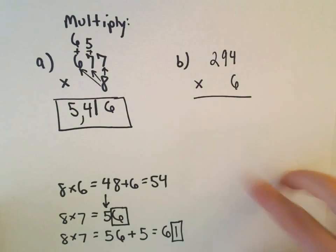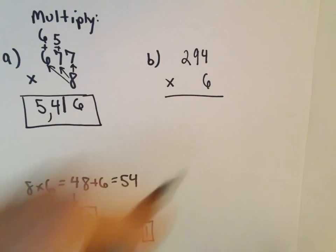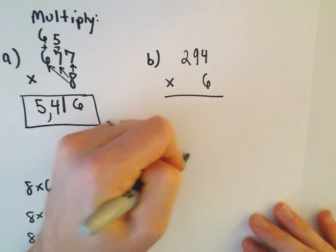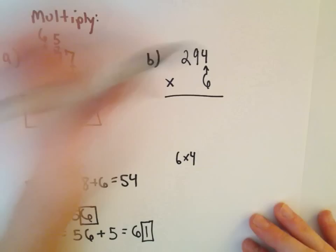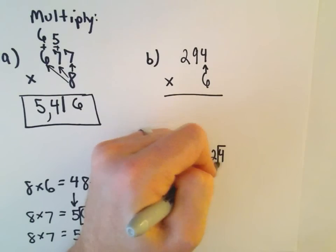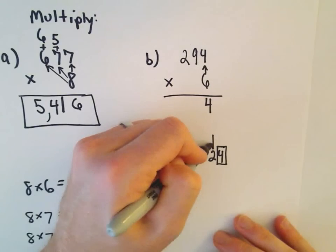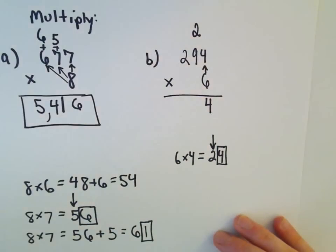Okay, so let's do another example, same idea. So 294 times 6. Okay, well, 6 times 4, I'm just multiplying there. That's going to give us 24. Again, we keep the rightmost digit in the same column, which is a 4. And we'll carry the 2 to the next column.